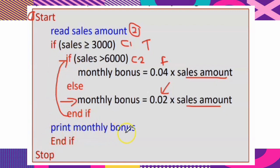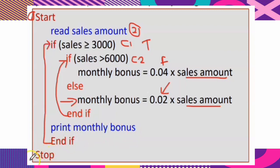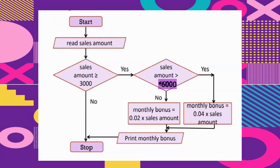Print monthly bonus. Then write END IF to terminate the outer IF block, and finally STOP.